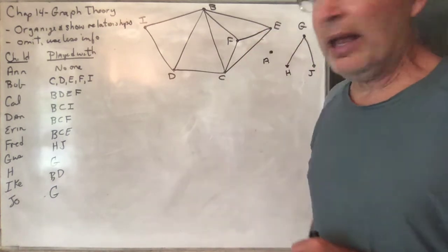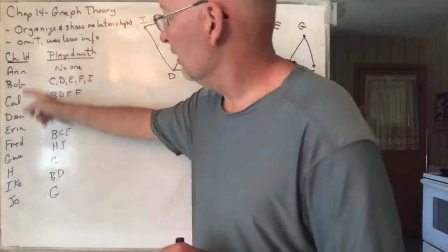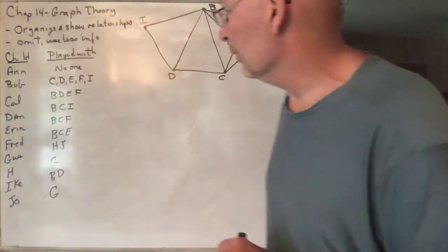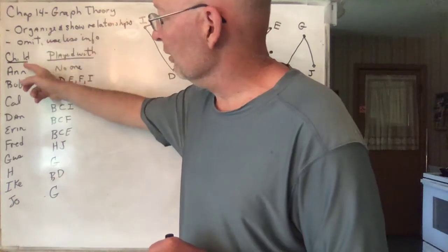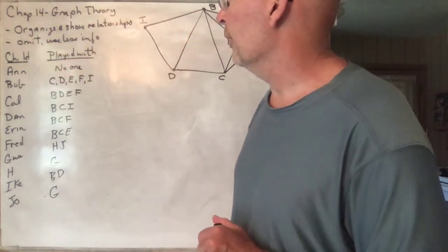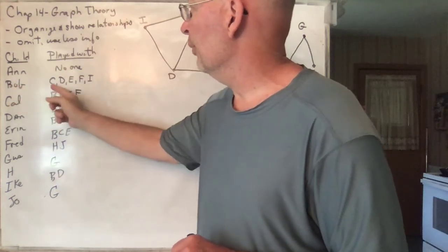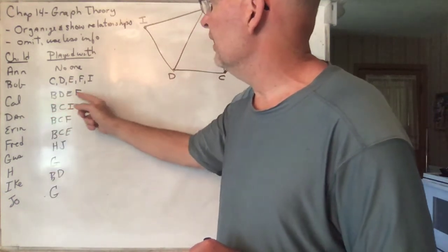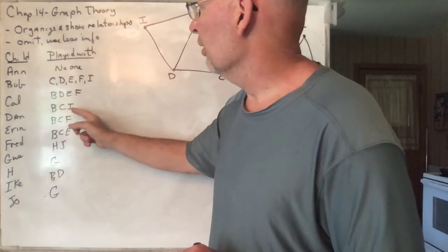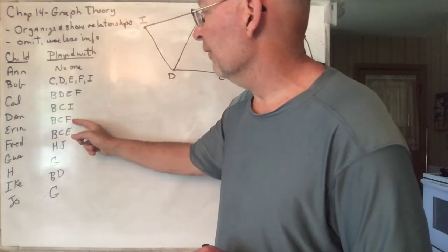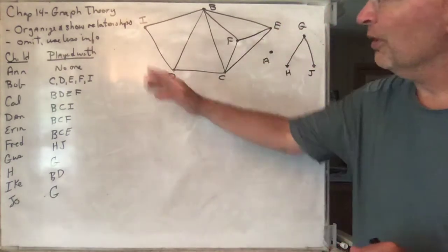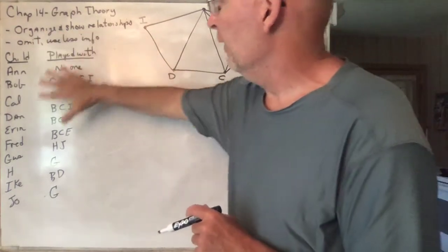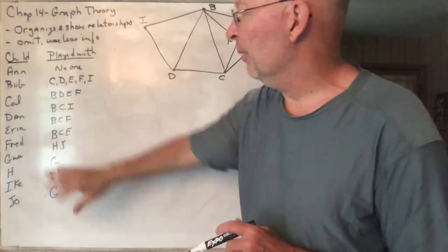The author gives a nice example. You've got some preschool class with 10 children in it. I labeled them all A through J, using as short of names as I could. So this teacher watches all these children and notices who each child plays with. Ann plays with no one. Bob plays with C, D, E, F, and I. Cal plays with B, D, E, and F. Dan plays with Bob, Carl, and Ike. Aaron plays with Bob, Carl, and Fred, and you can see all the rest.